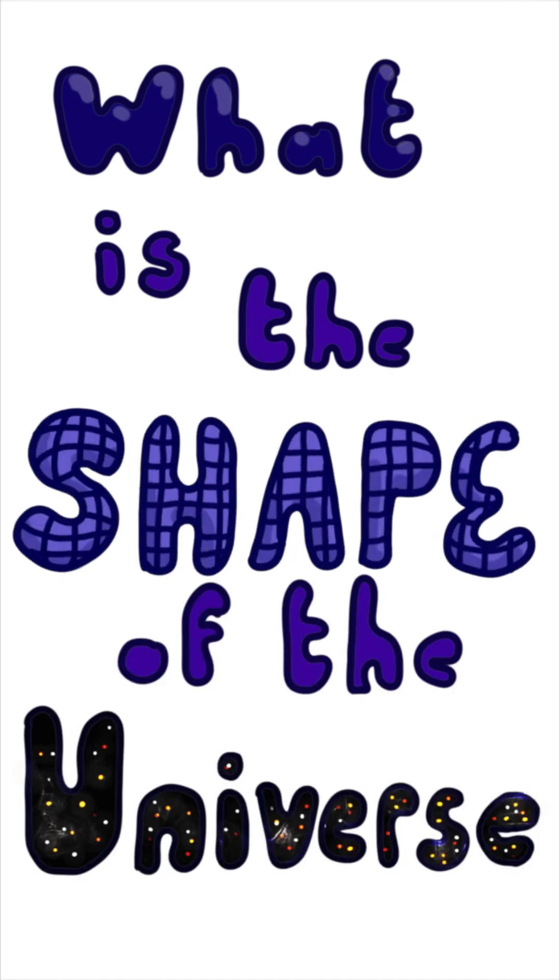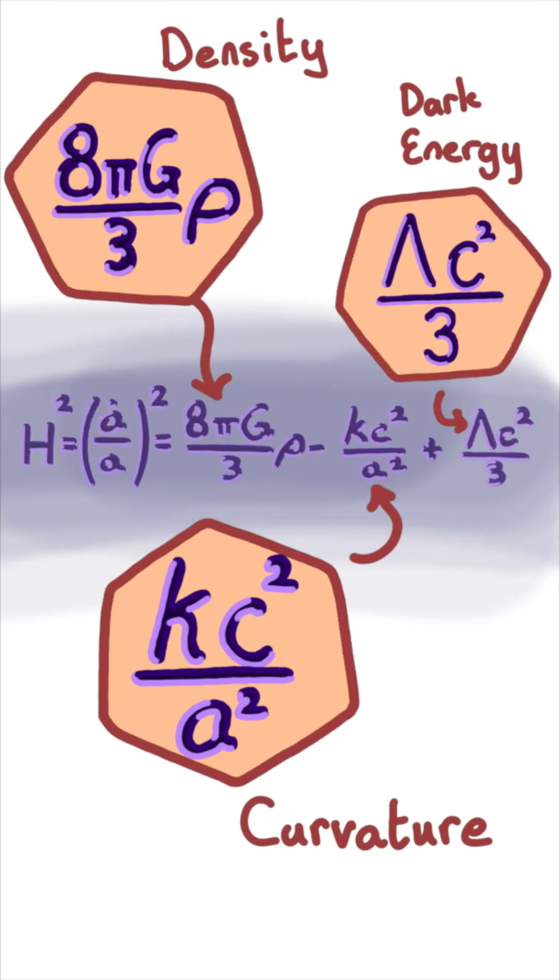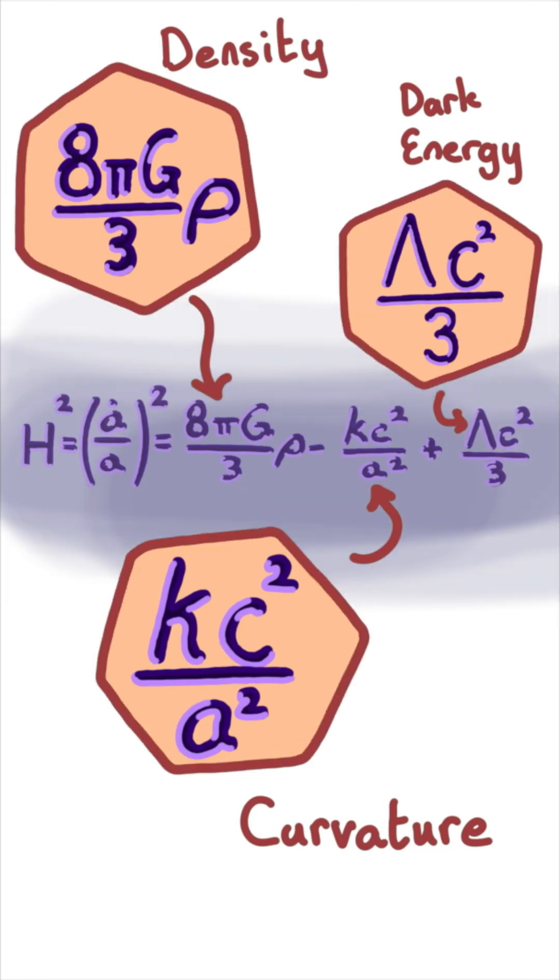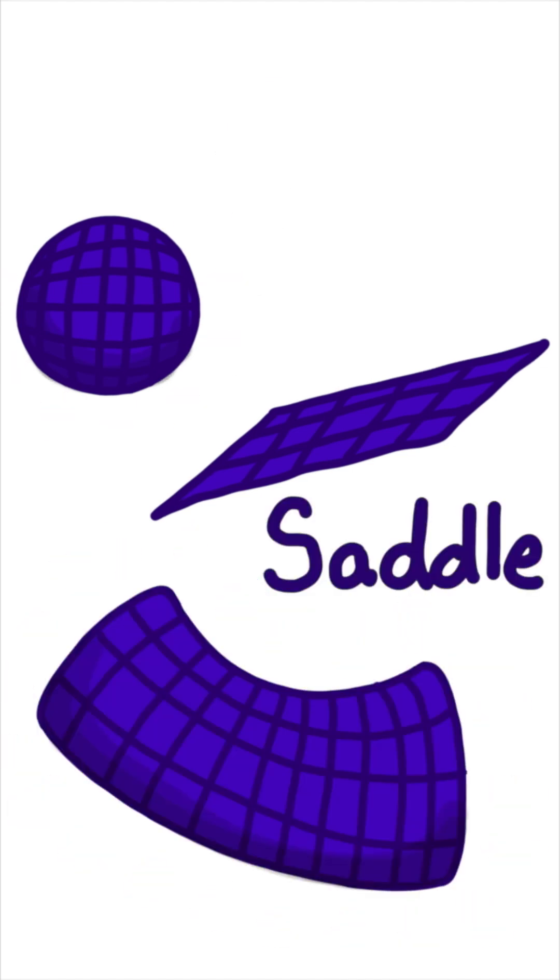What is the shape of the universe? Depending on a mix of cosmic variables, there are three possibilities: flat, spherical, or saddle-shaped.